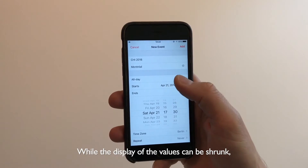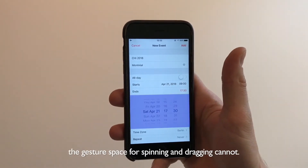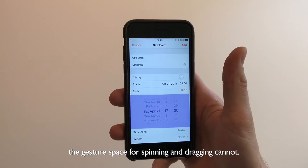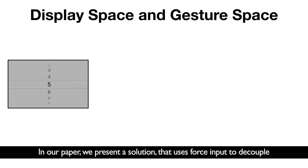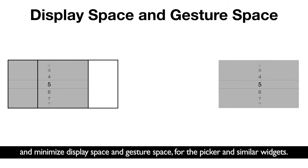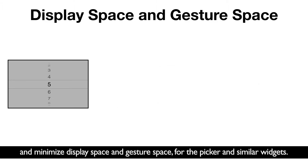While the display of the values can be shrunk, the gesture space for spinning and dragging cannot. In our paper, we present a solution that uses force input to decouple and minimize display space and gesture space for the picker and similar widgets.